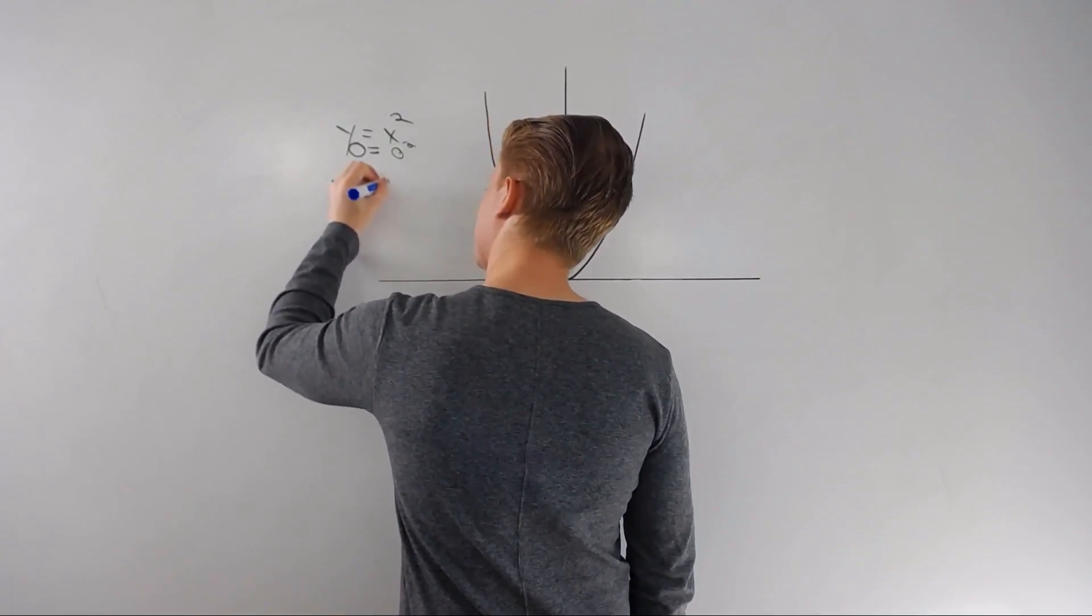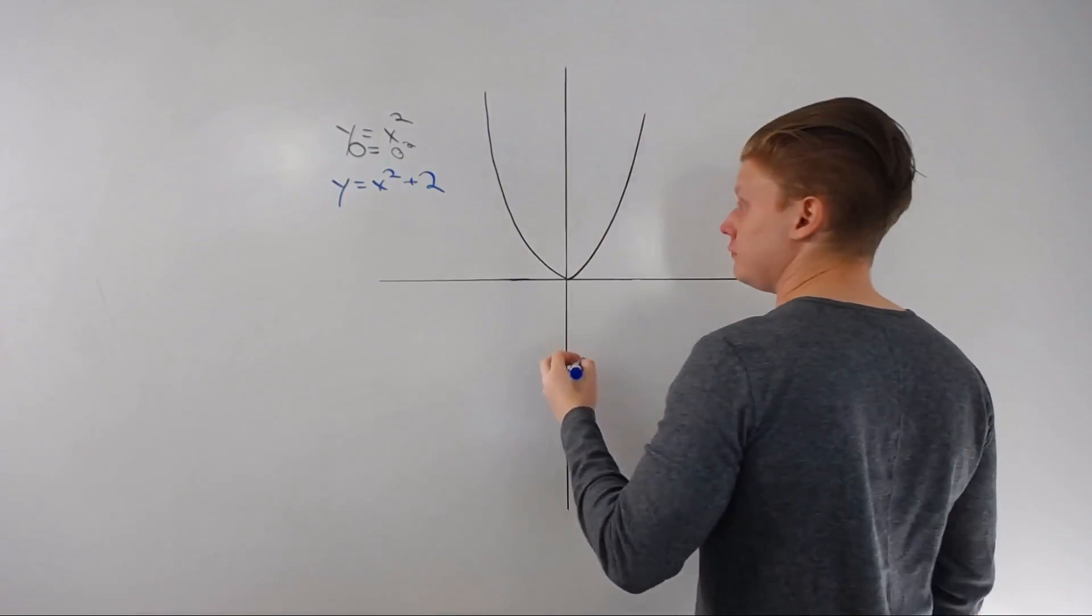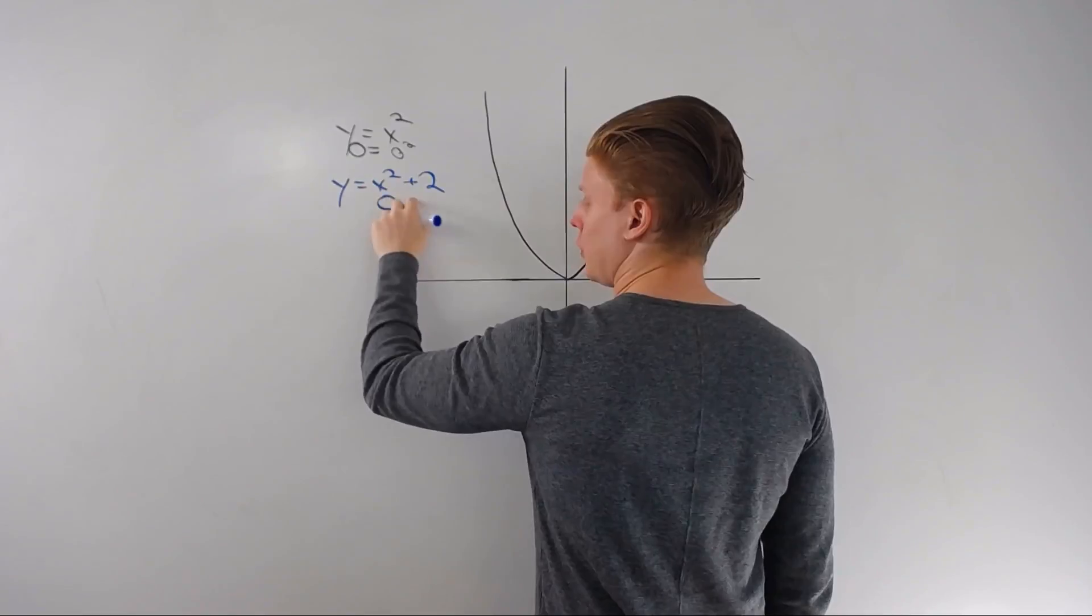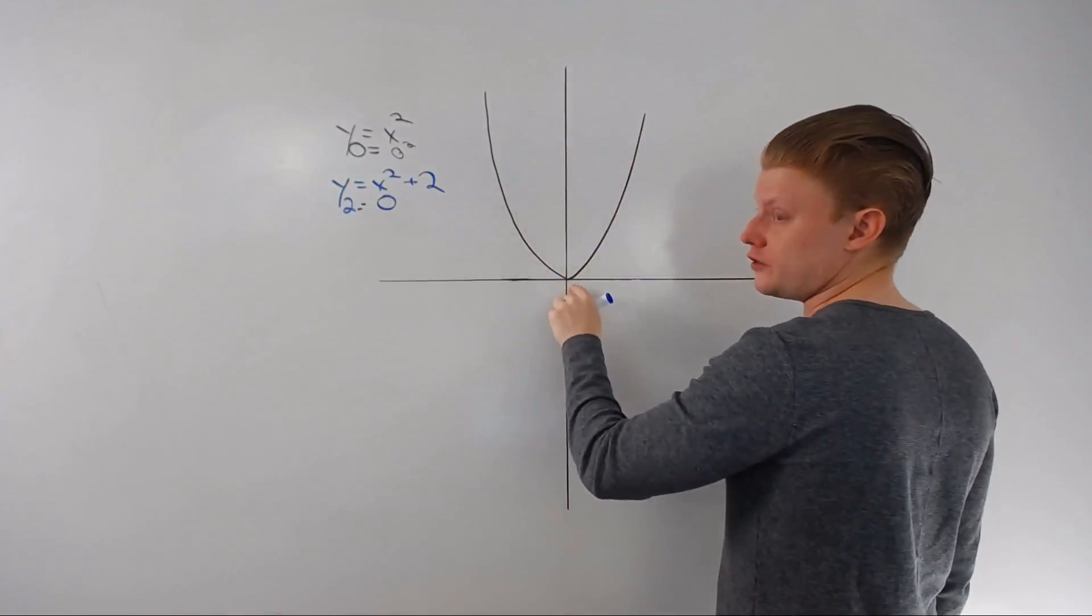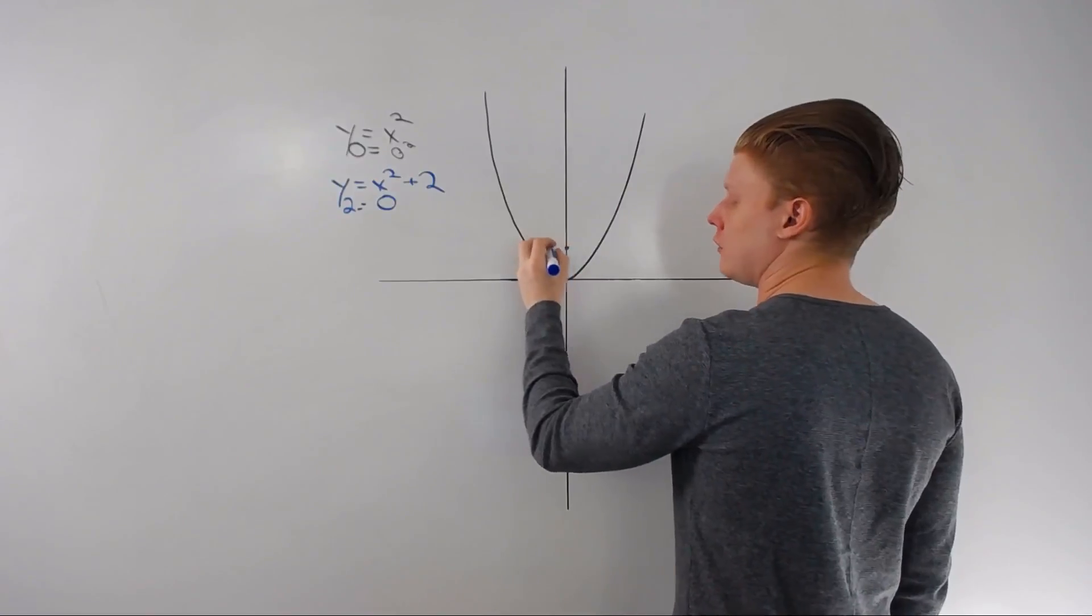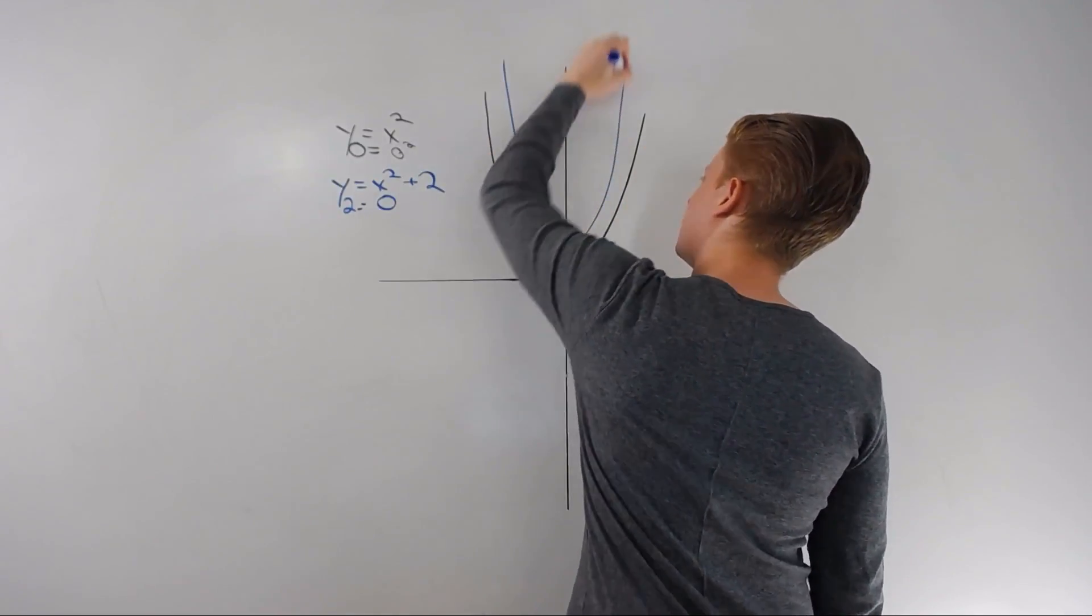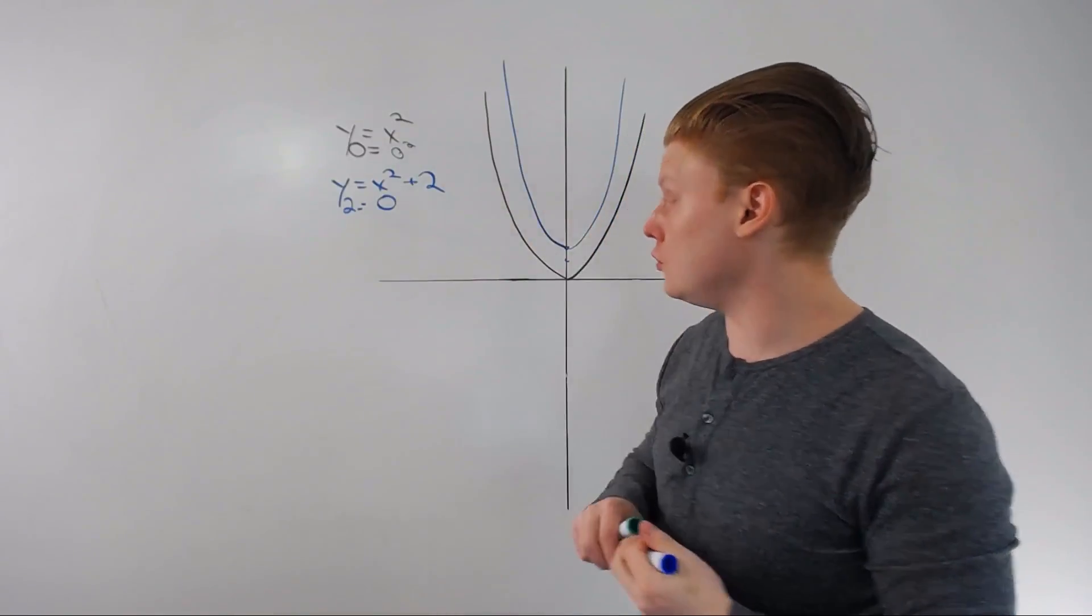y equals x squared plus two. Well in this case, when I plug in zero for x, I'm going to have zero squared, zero plus two is two. The vertex is no longer zero zero, the vertex is now zero two. It doesn't change horizontally but vertically it shifts up.